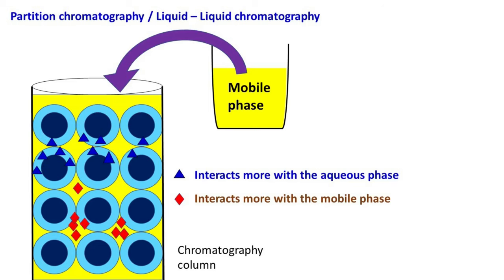The molecules that interact more with the mobile phase move fast whereas the molecules that interact more with the stationary phase move slow. Different sample molecules interact with stationary phase and mobile phase in different manners. Because of these differences in interaction, different sample molecules will have different rates of migration in the column.